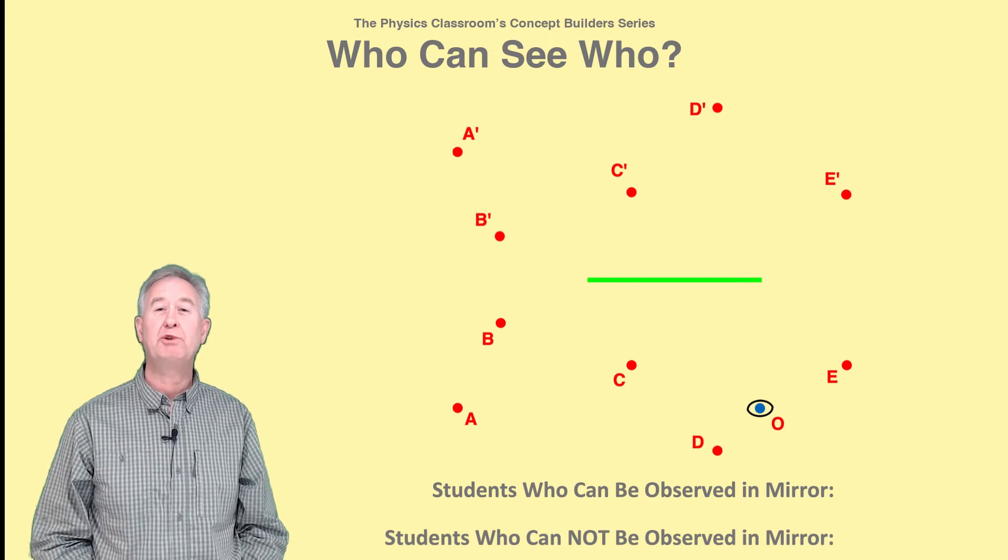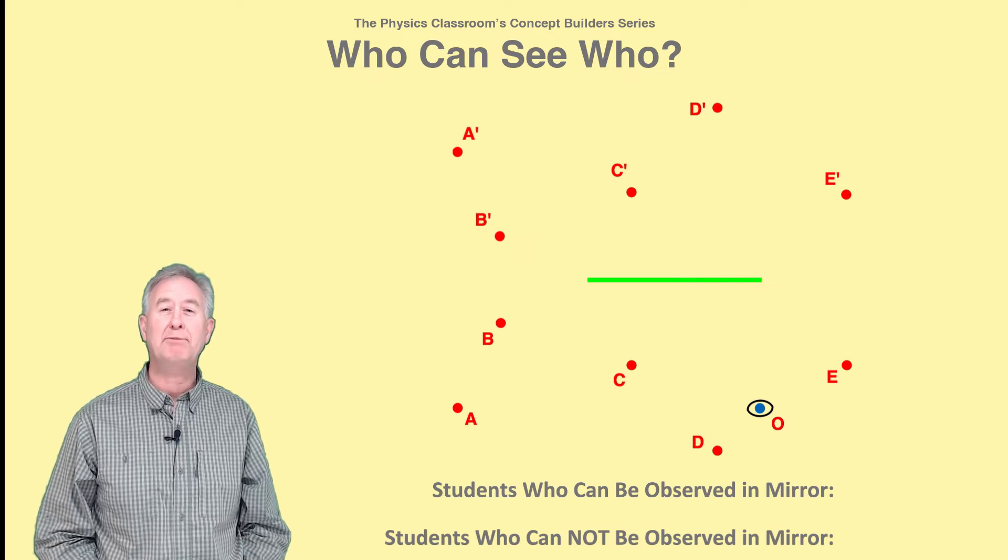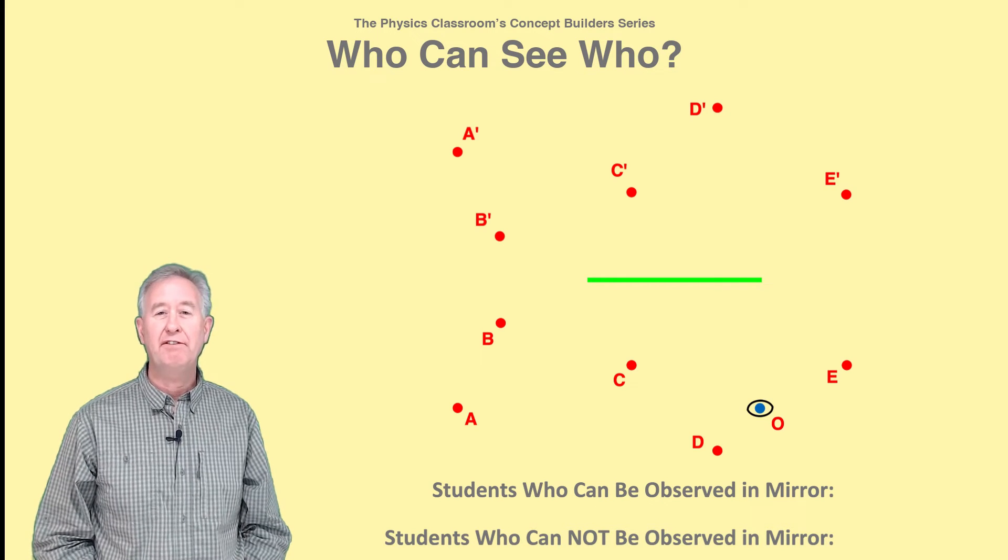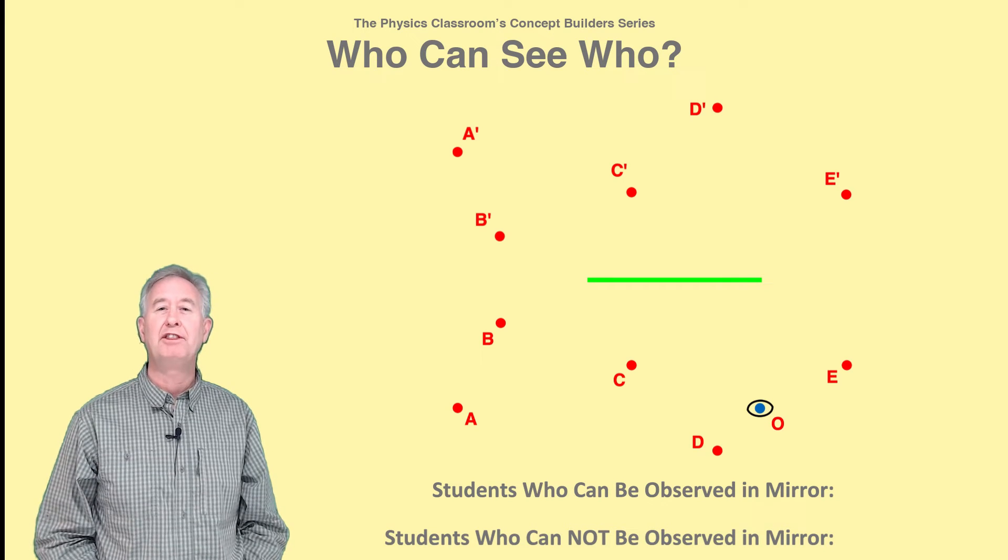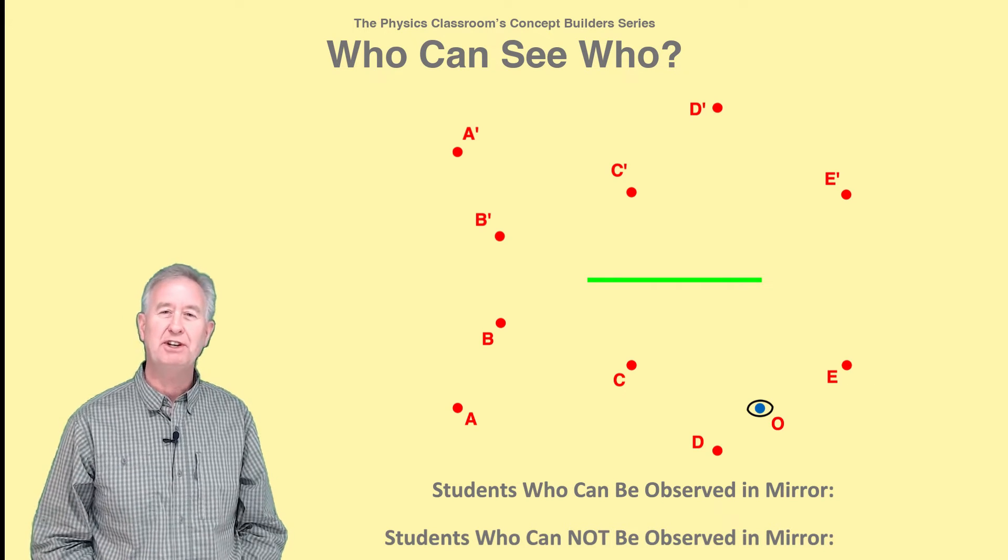The second step is to align a sight line from the observer to each student's image. If a sight line for any student intersects the mirror, then the observer can see the image of that student.